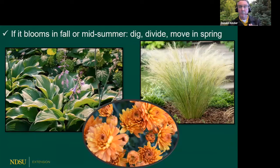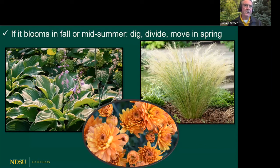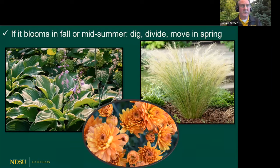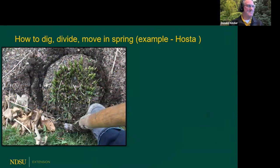If a perennial blooms in the fall or midsummer, we dig, divide, and move it in the springtime. Hosta send up their flowers in late summer, so we divide those in spring. Ornamental grasses send up their seed heads in late summer or fall, so we also divide those in spring. Hardy garden mums are a classic example — mums bloom in the fall, so we dig and divide in the spring.